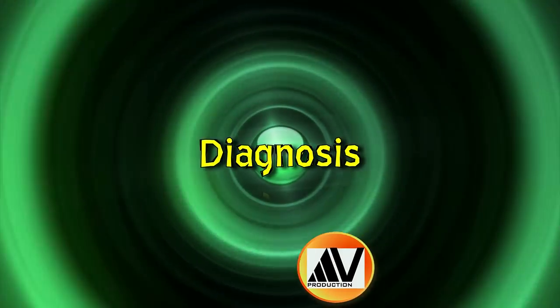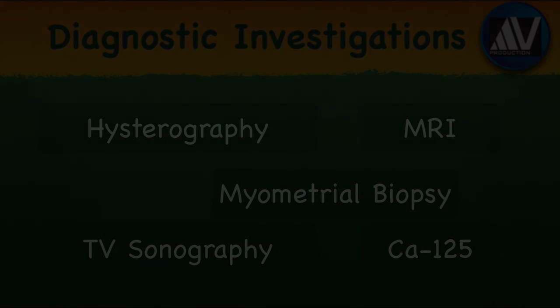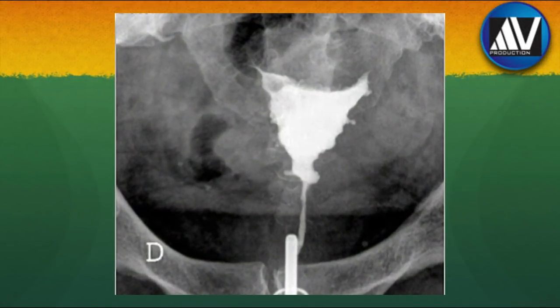I will now discuss the different methods of diagnosis of adenomyosis. Modern imaging techniques like transvaginal sonography and MRI have made it possible for the first time to make a non-invasive identification of adenomyosis. Various investigations that can be done to diagnose adenomyosis are hysterography, transvaginal sonography, MRI, myometrial biopsy, and CA-125. Hysterosalpingography will show irregularity of the uterine contour with small outpouchings of the contrast material, findings that represent diffuse adenomyosis. Unfortunately, the sensitivity of this technique is too low for clinical practice, and it is currently not recommended for diagnosis of adenomyosis.